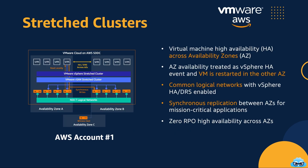Stretched clusters are a remarkable feature within VMware Cloud on AWS, designed to enhance availability and resilience by stretching your vSphere cluster across multiple availability zones within an AWS region. Within an AWS region, multiple availability zones (AZs) provide physically separate data centers. Stretched clusters span across two of these AZs, ensuring that even if one AZ faces a disaster or outage, your workloads seamlessly continue running in the other AZ. To achieve zero RPO (recovery point objective), stretched clusters use synchronous replication — when data is written to one AZ, it's simultaneously replicated to the other AZ, ensuring no data is lost in the event of a failure.